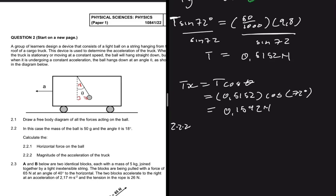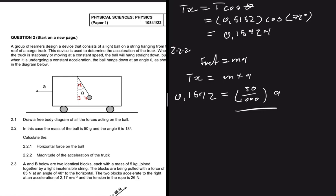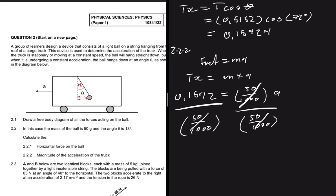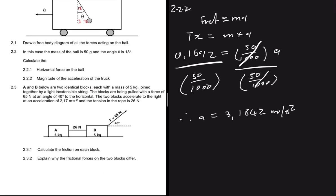Question 2.2.2: magnitude of the acceleration of the truck. As soon as we hear about acceleration, we use F_net = ma. There is only one force acting horizontally, which is Tx. So: Tx = m × a → 0.1592 = (50/1000) × a. Dividing both sides by 0.05 gives an acceleration of 3.1842 meters per second squared.